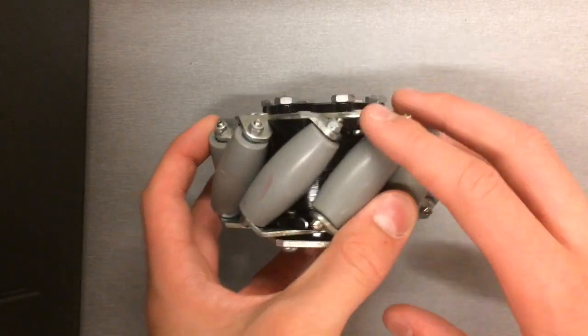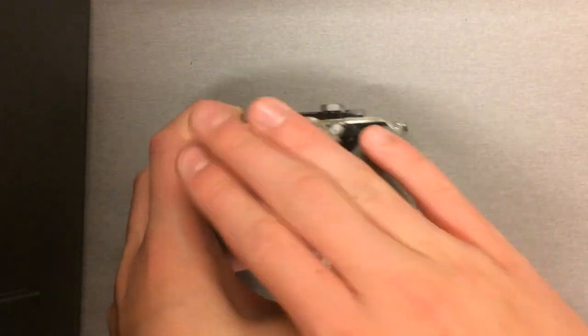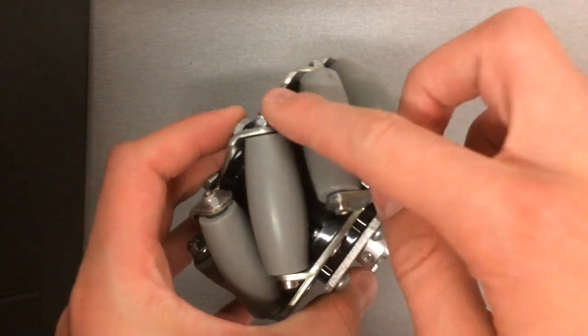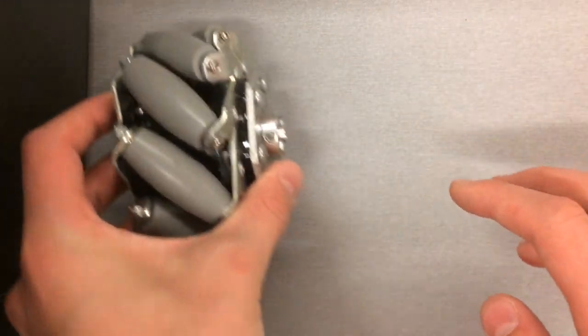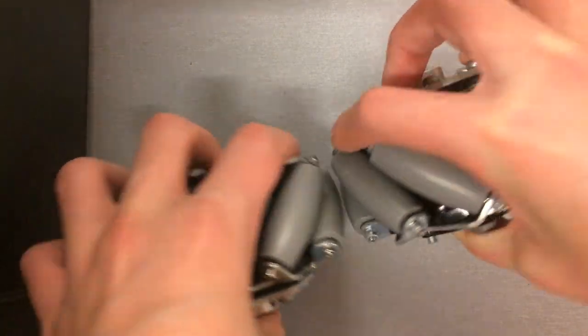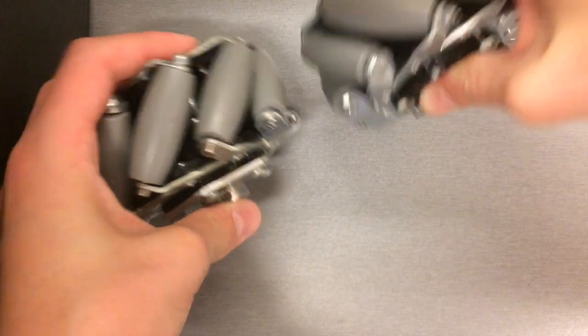This is a mecanum wheel. It is very special because it can help a robot move sidewards as well as forwards and backwards. This wheel is made up of many rollers and if you use two of them and turn them against each other, the robot will move sidewards.